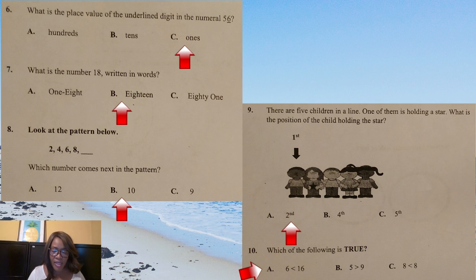Question 6: What is the place value of the underlined digit in the numeral 56? So the 6 is underlined and the child should know by now that once you start from the right hand side, ones, tens, hundreds and so on. So the 6, the value, ones. So the answer would be option C. Question 7: What is the number 18 written in words? By now, children should be counting from either 1 to 100. So they should know that the 1 and the 8 when they are together, it's 18. E-I-G-H-T-E-E-N. It is not 1 8. It is not 81. The 1 and the 8 together make 18.